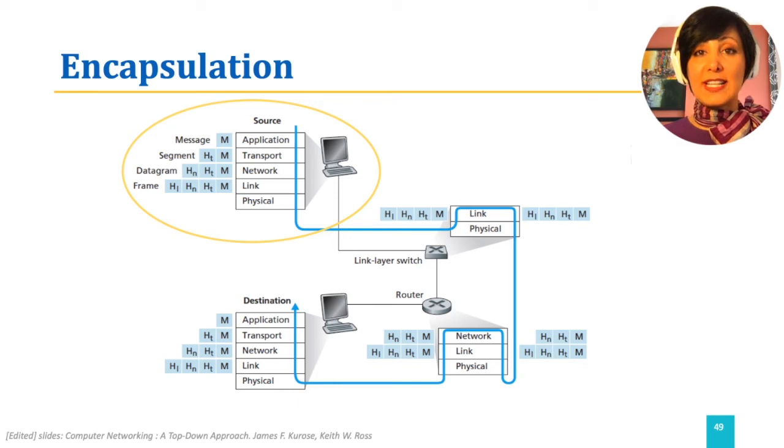The network layer datagram is then passed to the link layer, and the link layer header is added to it. The packet of information at this stage is called a frame.